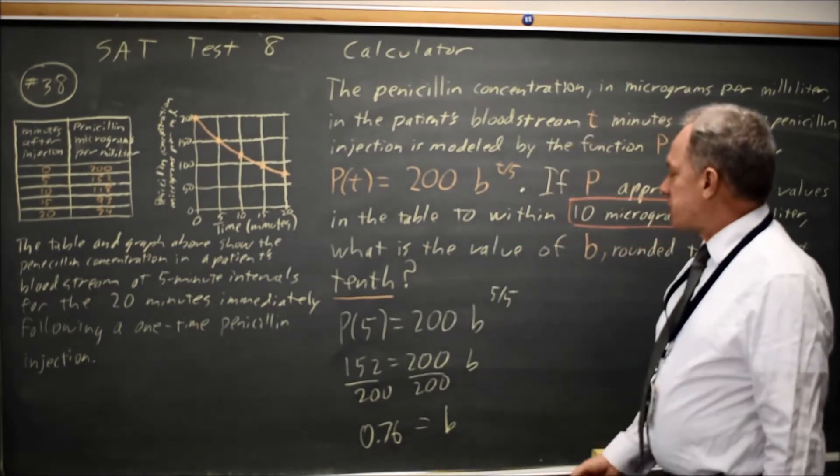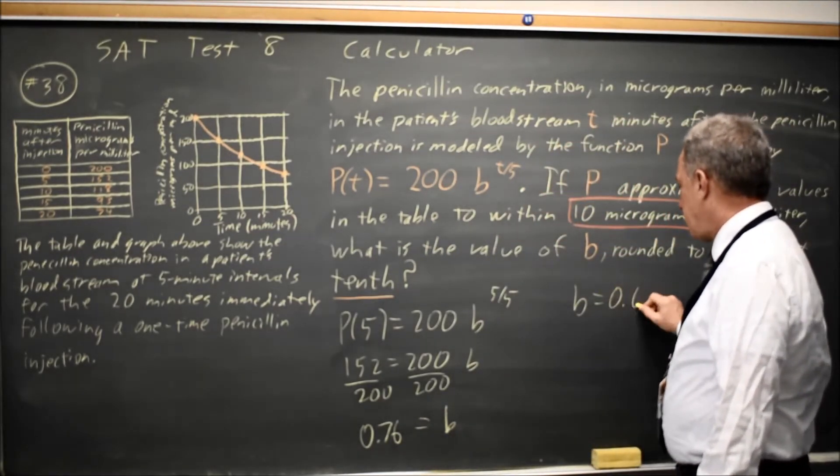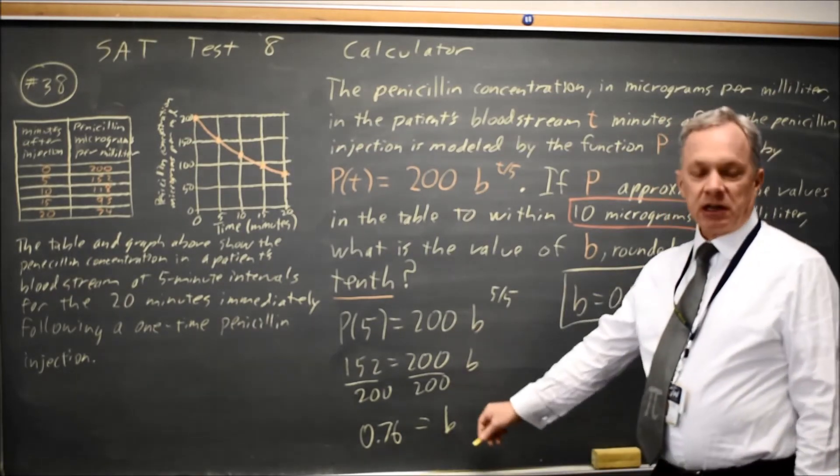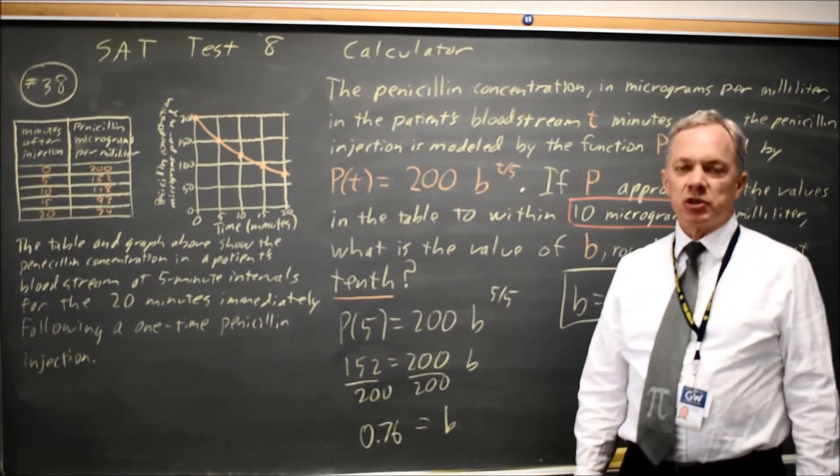As I found with guess and check, to the nearest tenth, b equals 0.8. So we found it analytically, we also found it by guess and check. Both are completely valid approaches.